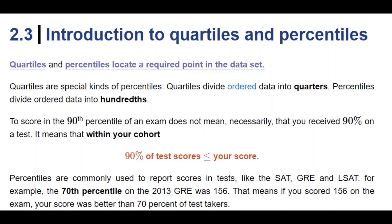So you have performed among the top 10%. Percentiles are commonly used to report scores in national and international tests like SAT and GRE. For instance, a 70th percentile of the 2013 GRE test was 156, meaning that if you scored 156 on that exam, your score was better than 70% of the test takers.